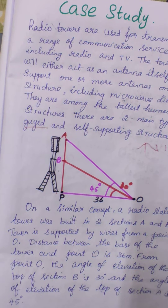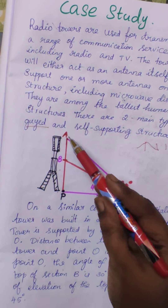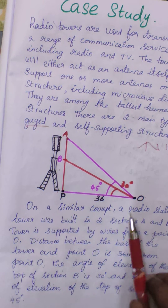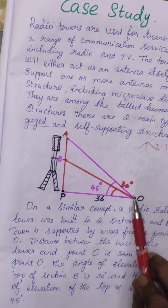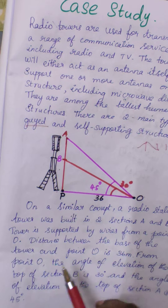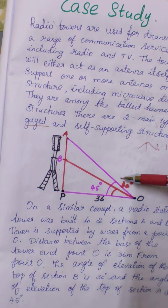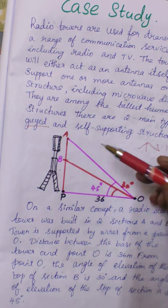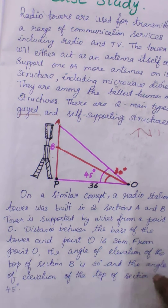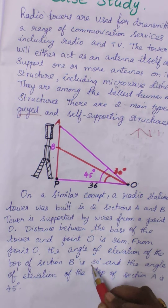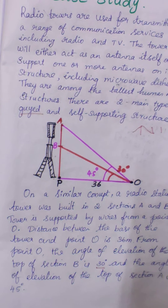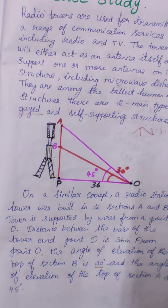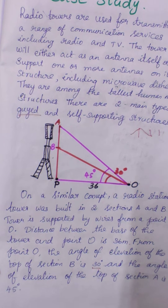We are taking AP as the full tower, which has two sections in it. PA's height is unknown as of now. There is a point O on the ground from which two guide wires connect to the tower. From point O, one guide wire makes an angle of elevation of 45 degrees to the top of section A, and another makes an angle of elevation of 30 degrees to the top of section B. We can see three triangles inside this figure. We will calculate the required values from the questions given.